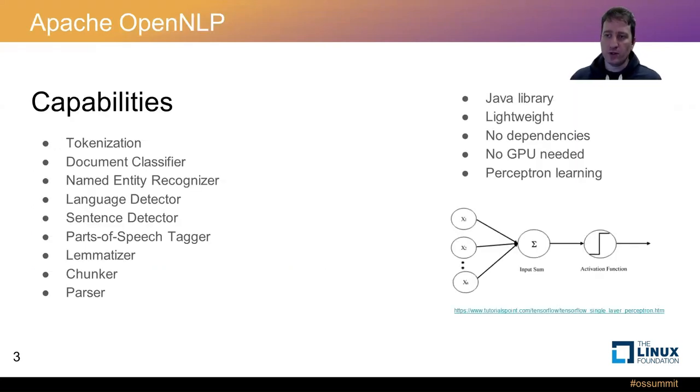Apache OpenNLP is a Java library for doing a lot of common natural language processing tasks. On the left side are some of OpenNLP's capabilities like tokenization, document classification, named entity recognition, and language detection. It's a lightweight library. It does not have any dependencies, and it does not require a GPU to train and use models.